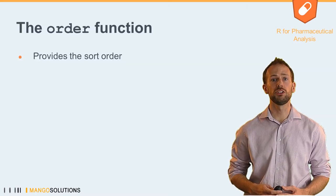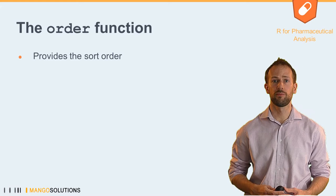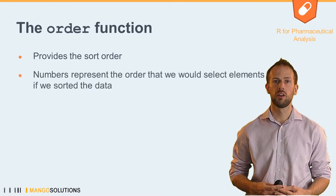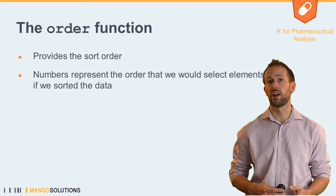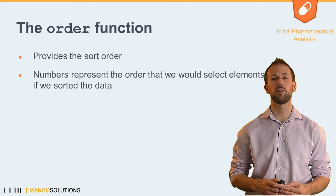In fact, the order function has produced a vector of positions. In other words, a sort order. These positions correspond to the elements that we would select if we were to sort our data.